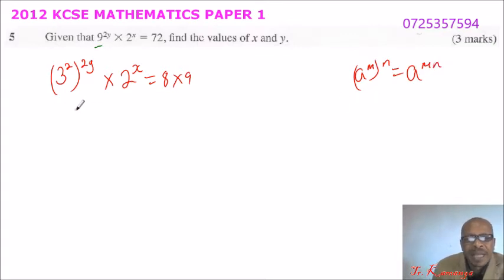So you can combine this and say this is 3 raised to power 4y. You multiply 2 times 2 you get 4y.